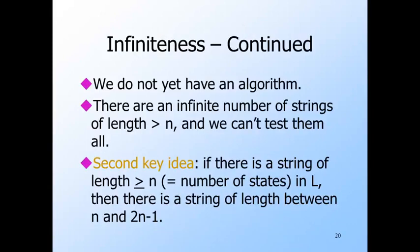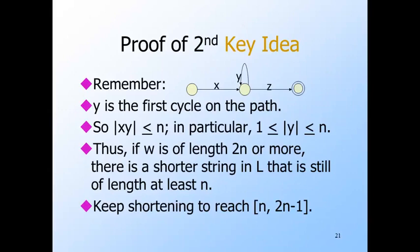We still do not have an algorithm, because we can't test an infinite number of strings of length at least n. However, it is sufficient to test strings of length between n and 2n−1, and there are a finite number of such strings. We picked y to be the first cycle on the path, so the length of xy cannot be greater than n — some state within the first n+1 states on the path surely repeats.